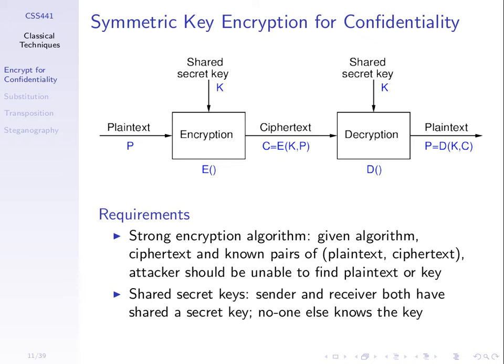An attacker is assumed to know the algorithm used — the steps for encryption and decryption — and they know the ciphertext, which they can intercept. Their goal is to find the plaintext or the key. If they find the plaintext, confidentiality is defeated. If they find the key, they can easily decrypt because they know the algorithm and the ciphertext. The attacker aims to find the key or the plaintext; they are given the ciphertext and the algorithm, but not the key.